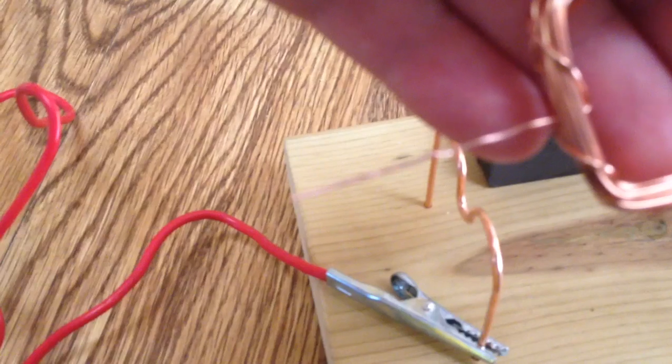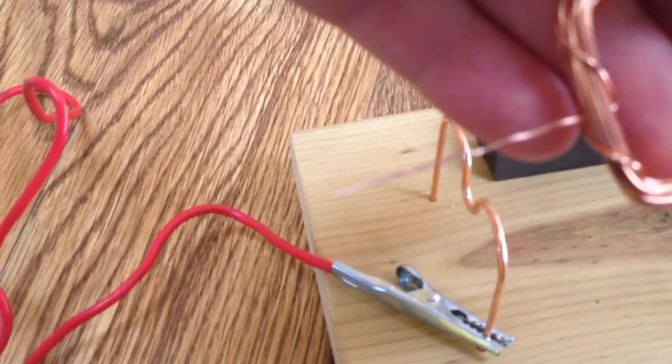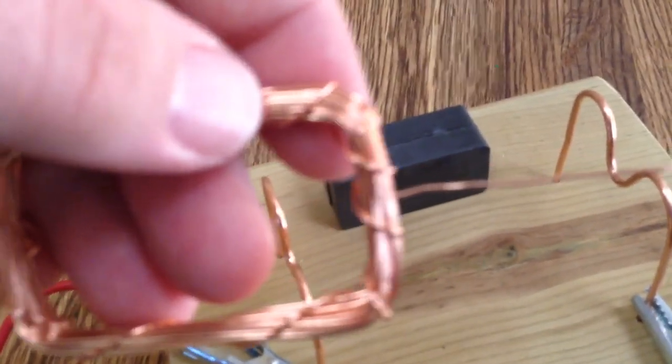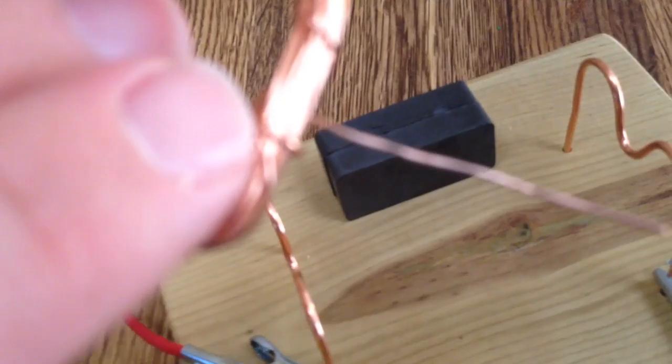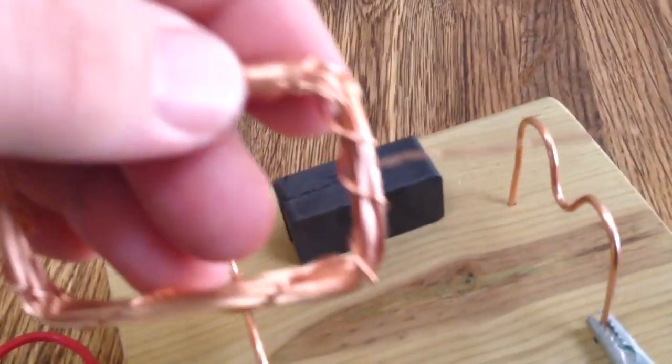On one end the enamel has been stripped off so there's no insulation, there's bare wire on this end. On this end the trick is the insulation has been stripped off only on one side. The other side is still insulated.